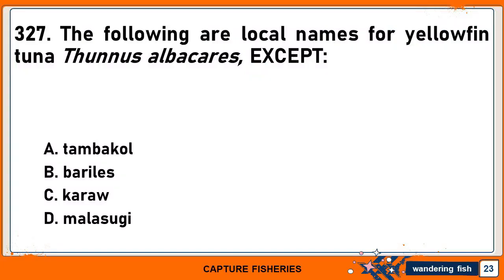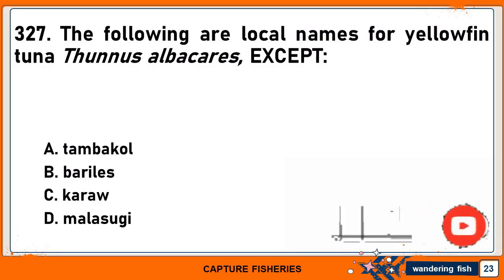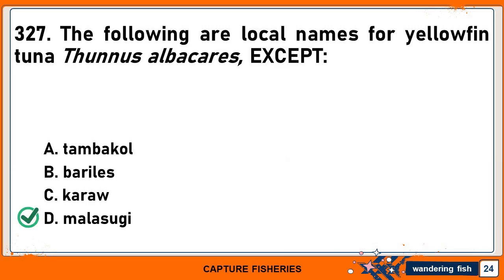The following are local names for yellowfin tuna, Thunnus albacares, except: A. Tambikol. B. Baralas. C. Kara. Or D. Malasugi. The correct answer is D. Malasugi. Malasugi is a local term either for sailfish or marlin.